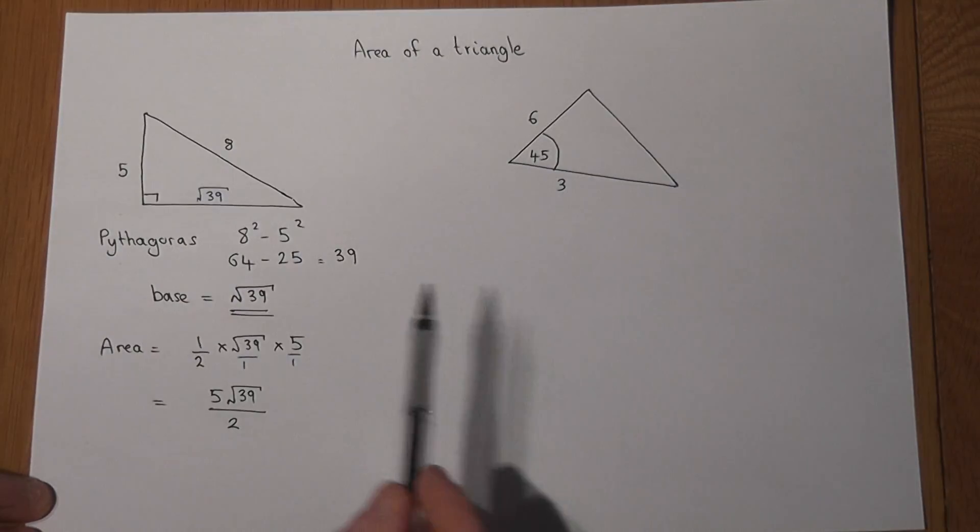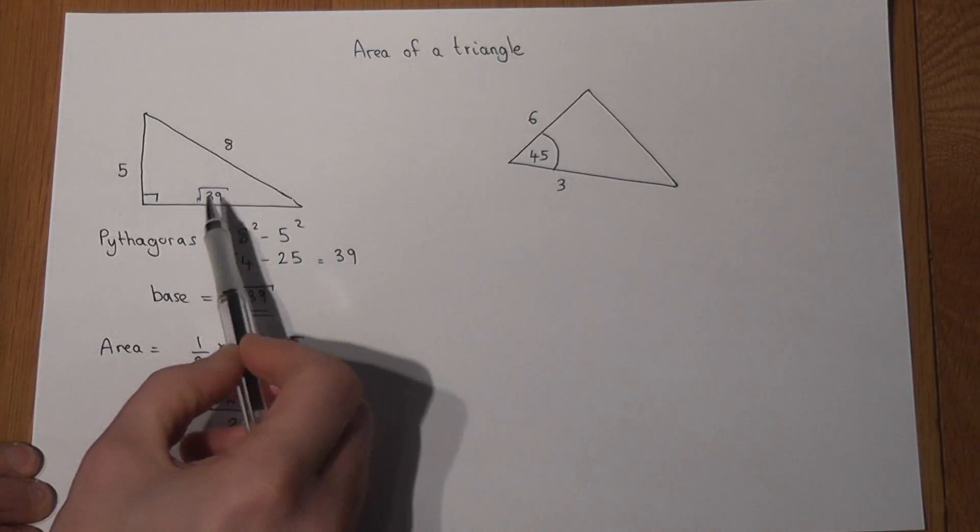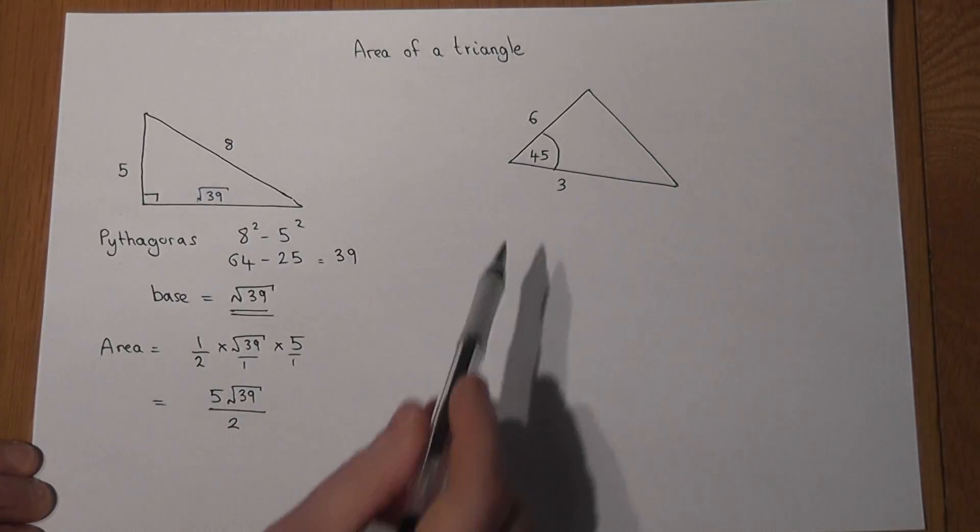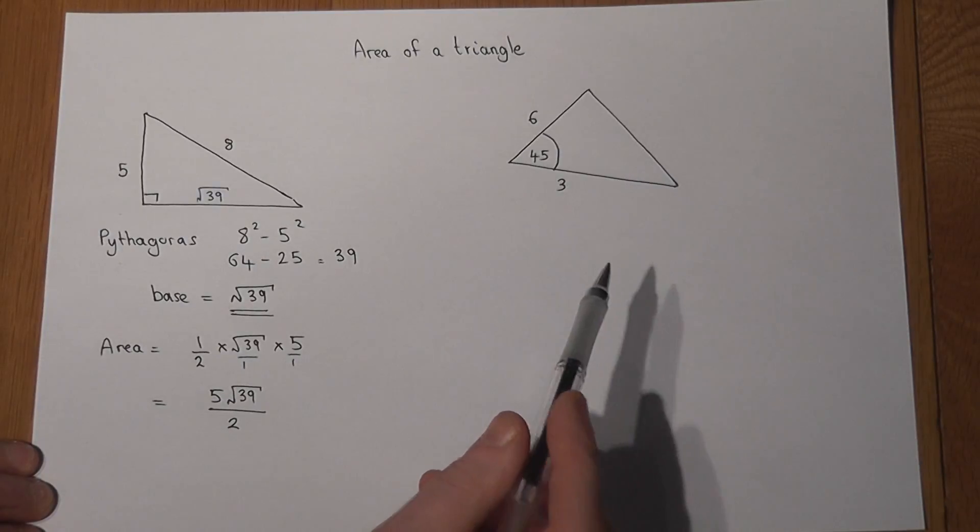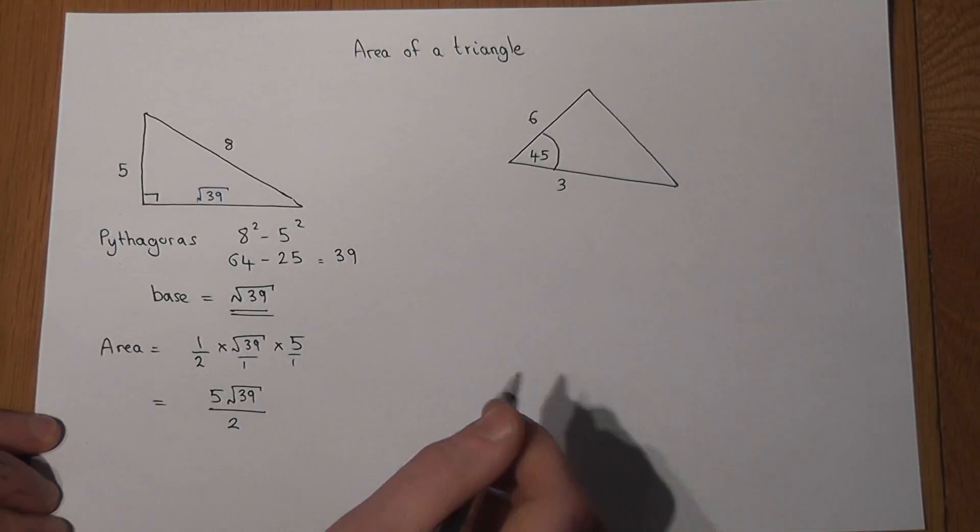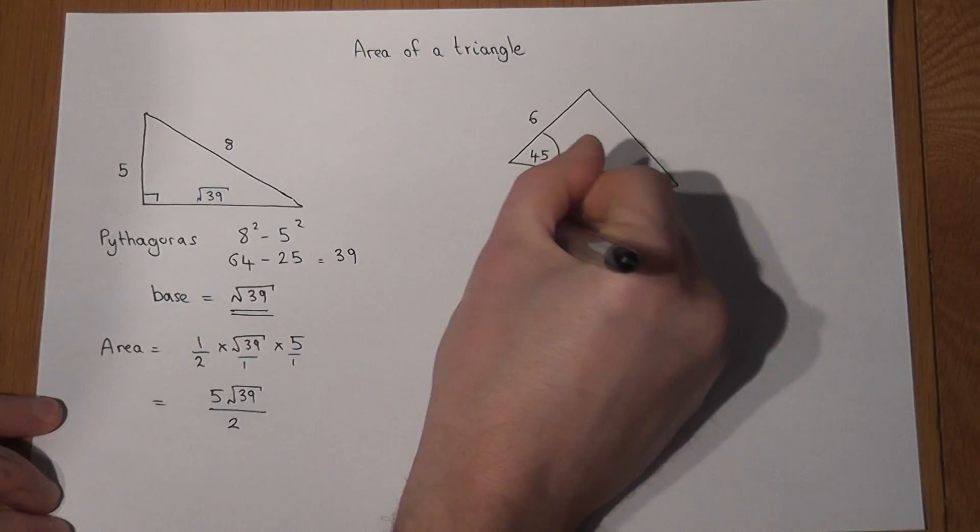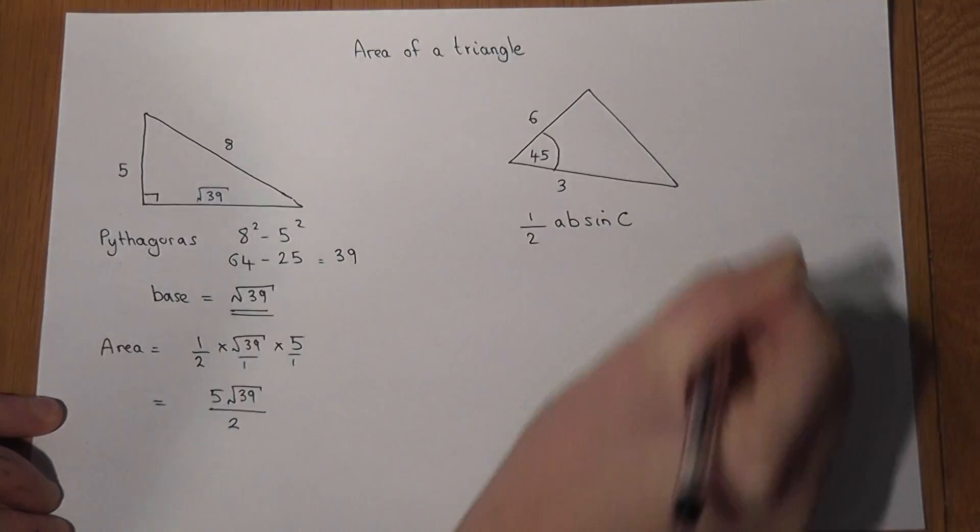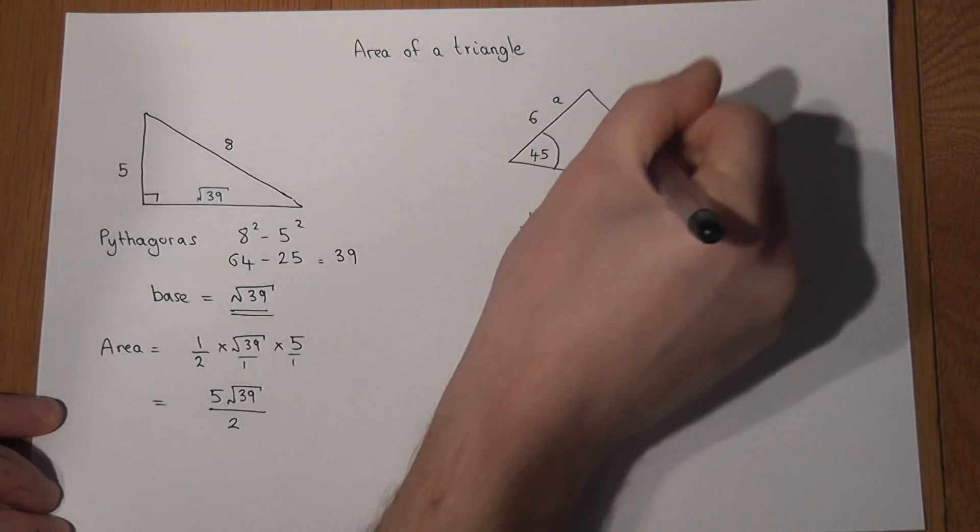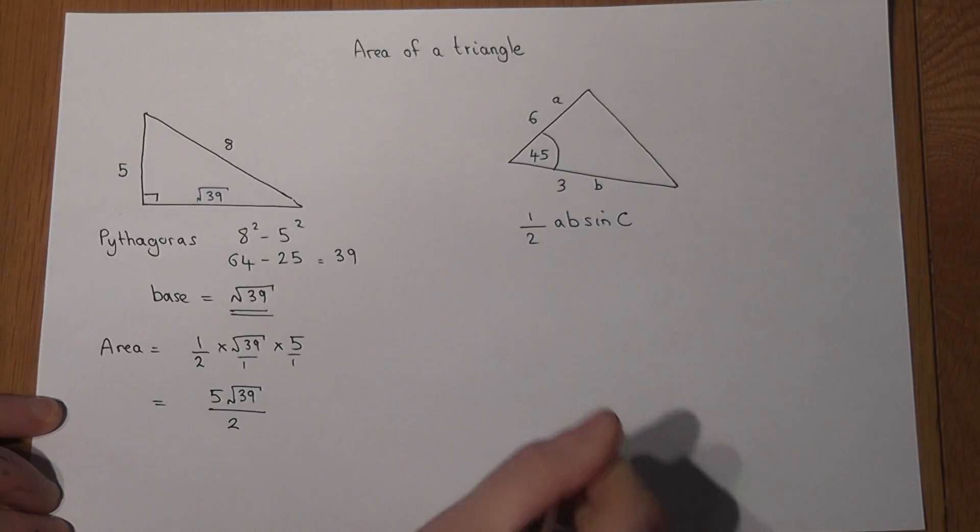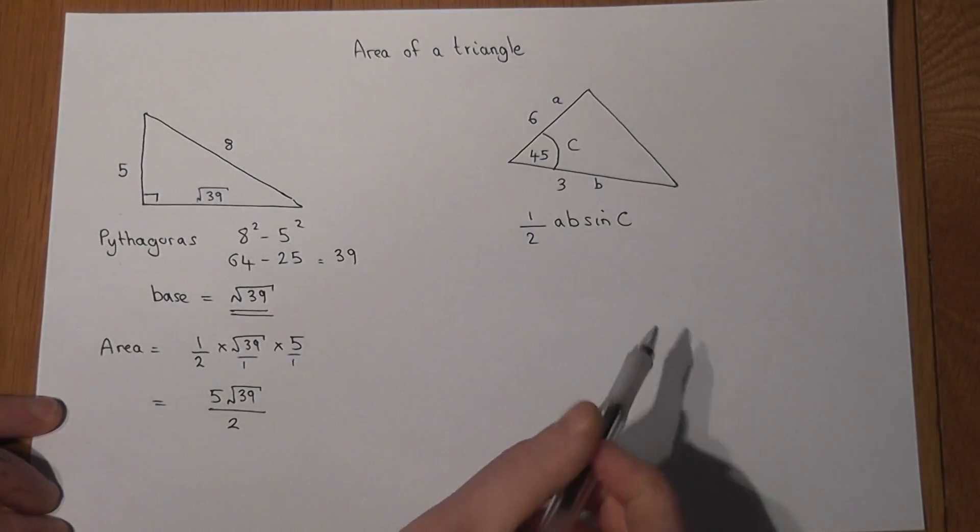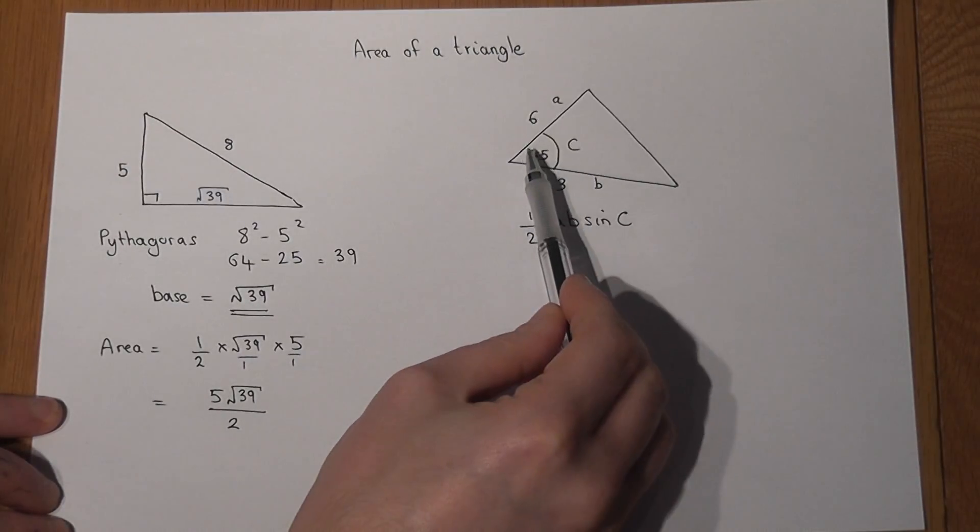So in the first example we could find out the base or the height using Pythagoras. In the second example there's no right angle necessarily, however there's a formula we could use, which is a half AB sine C, where the sides are A and B and the angle is C. And that's a general result to find the area of any triangle if you know side-angle-side.